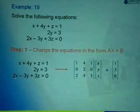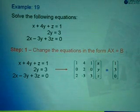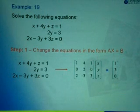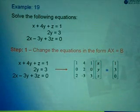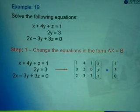For the next equation we have 2x, so the multiple is 2, we write down 2. The multiple of y is negative 3, we write negative 3. And 3z, multiple is 3, so we write 3. Then followed by x, y, z. On the right hand side, we take 1, 3, 0 as the matrix for b. That is step number 1.